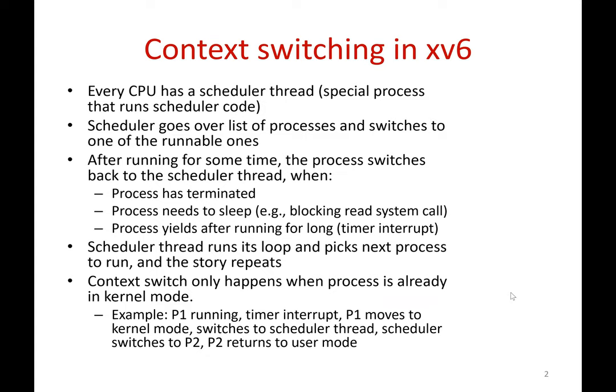Before we understand context switching, it is important to know how processes and schedulers exist in Xv6. In Xv6, every CPU has a separate process-like thing called the scheduler thread. It's not a user process — it doesn't have any user-level code — but it is like a process for all practical purposes. Every CPU has its own scheduler thread whose job is to find processes to run on that particular CPU.